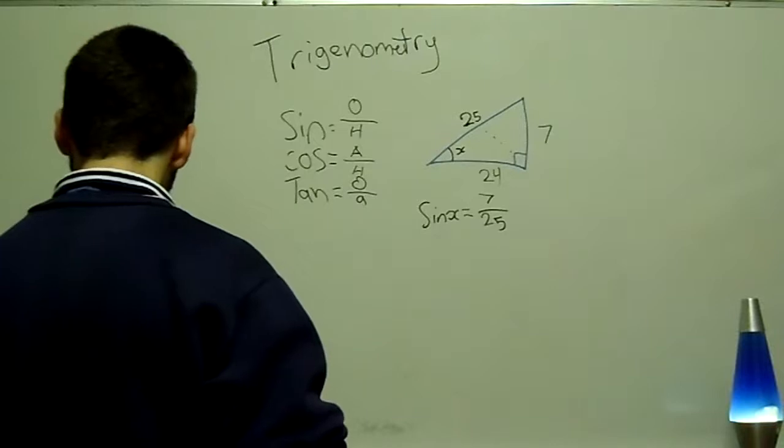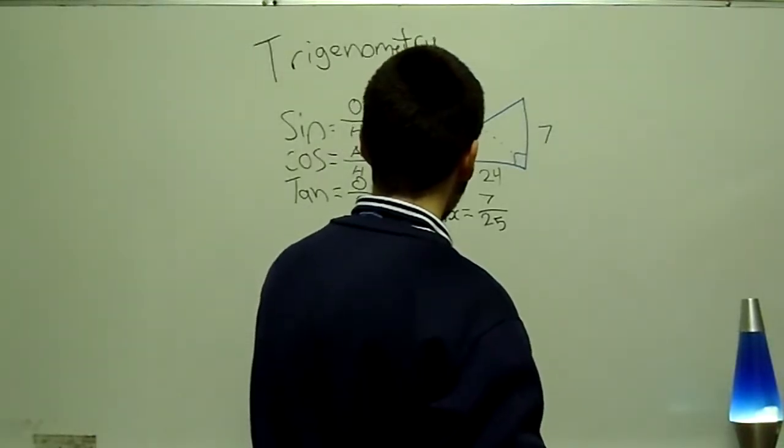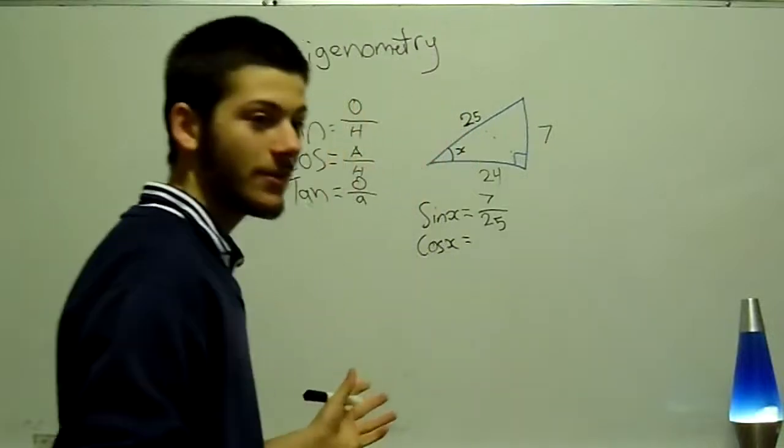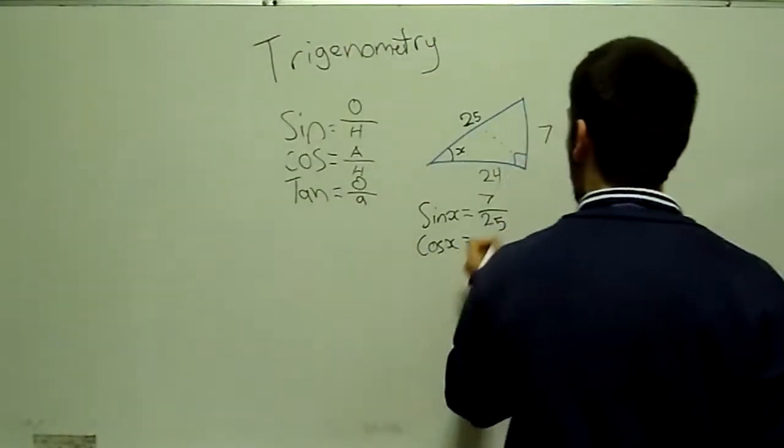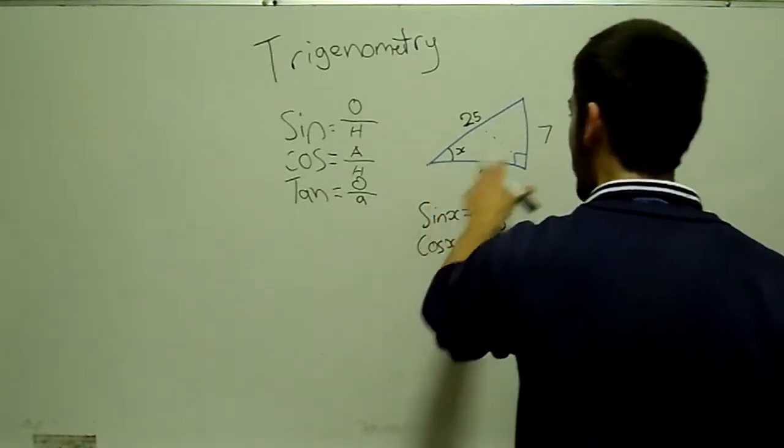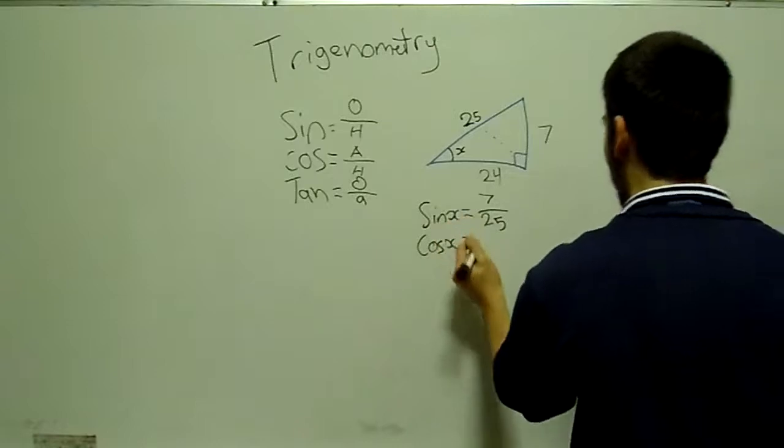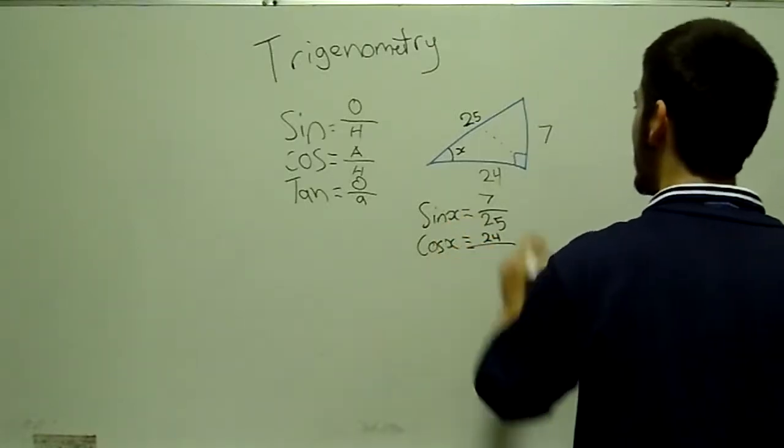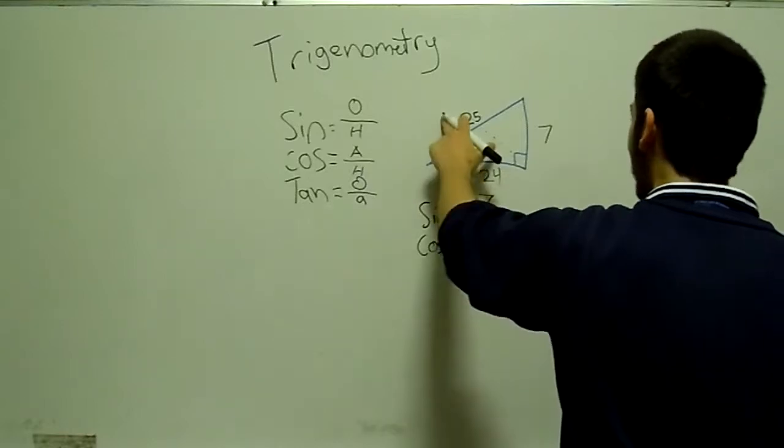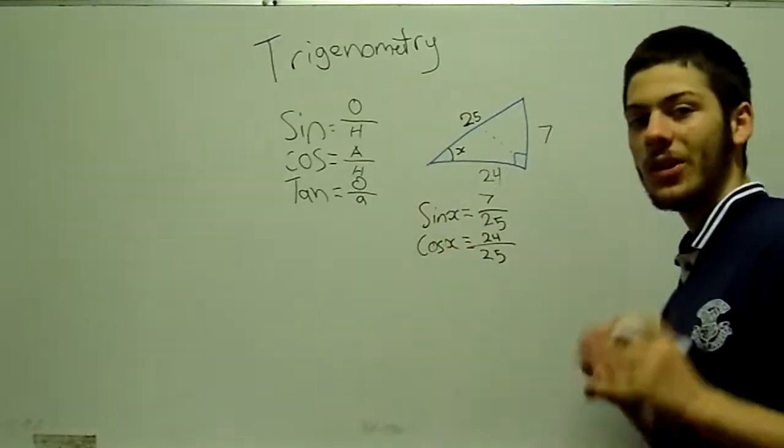Next, we've got cos x as well. Cos x. Now what's cos? Cos is adjacent over hypotenuse. So we get our adjacent. So it's not the opposite. It's not the hypotenuse. It's the adjacent. The adjacent here is 24. So we put 24 over the hypotenuse. We already know the hypotenuse here. It's 25.